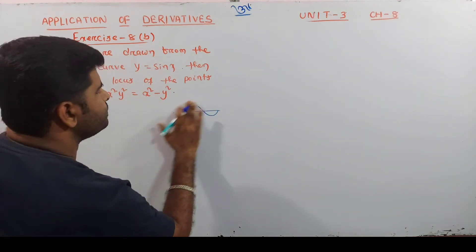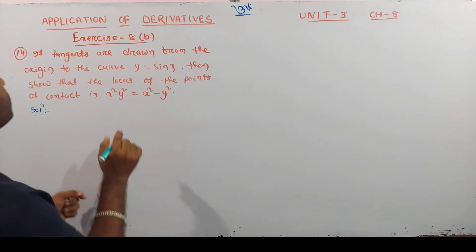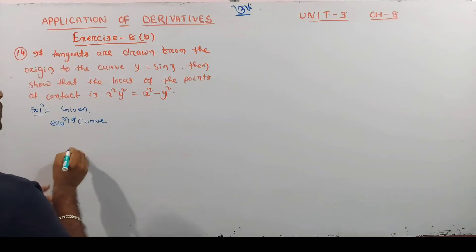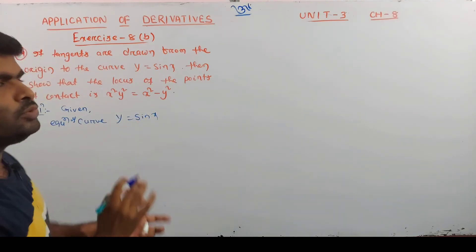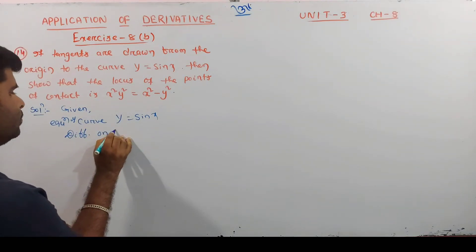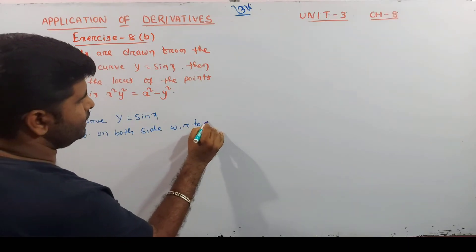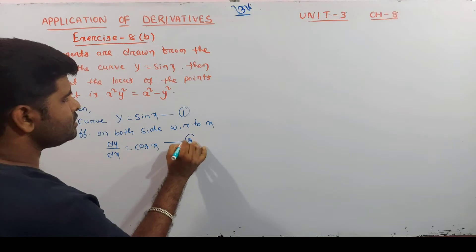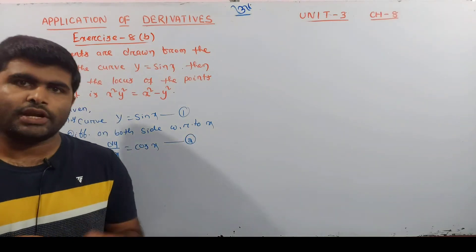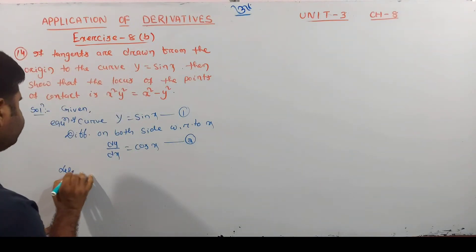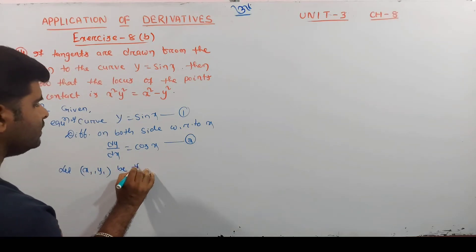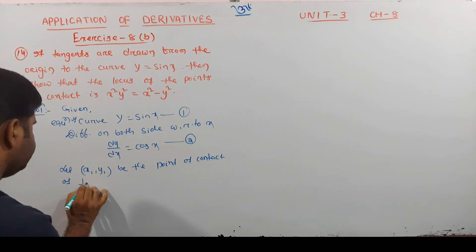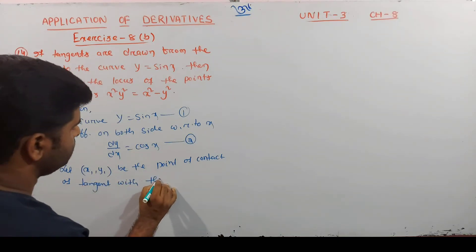Solution: Given equation of curve y = sin x. Differentiate on both sides with respect to x: dy/dx = cos x. Let (x1, y1) be the point of contact of the tangent with the curve.